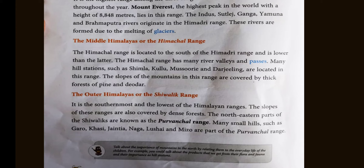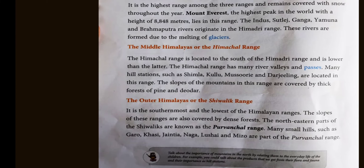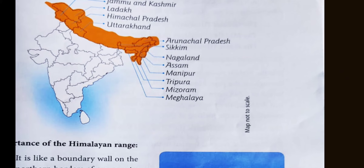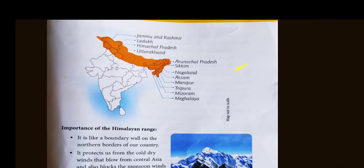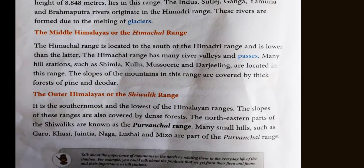The Outer Himalayas, or the Shivalik Range — the slopes of this range are also covered by dense forest. We are in northern India, on the north side of the Shivalik. There is forest here. The eastern parts of the Shivalik are known as the Purwanchal Range.